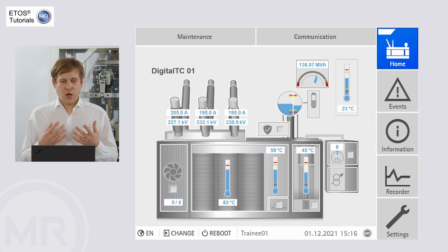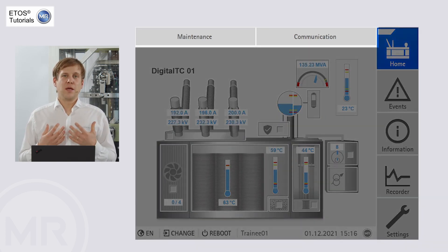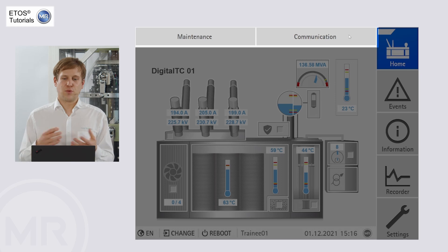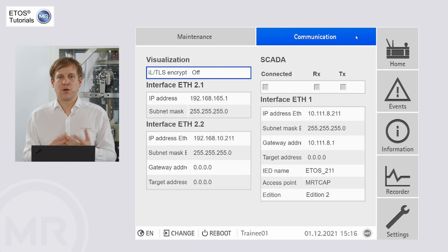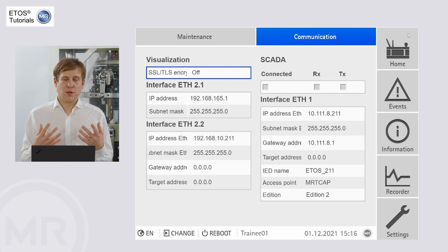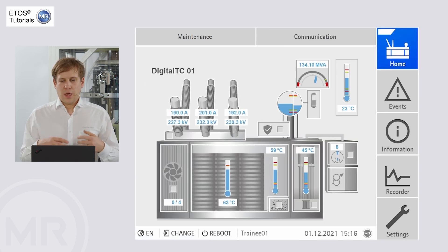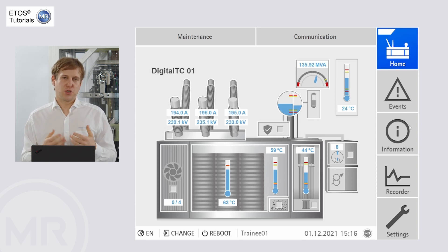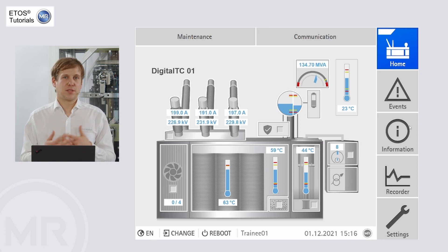On the top section we have the main navigation bar, which has two functions. On the home screen it holds, for example, the communication settings — if I click on communication you can see all the settings for IP addresses, SCADA communication, and so on. Whenever I go deeper into any of the submenus for information or parametrization, it shows a tree structure on top so you can easily see where you are and how to get back.